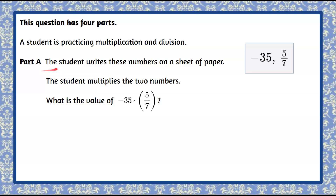Here's part A. The student writes these numbers on a sheet of paper. The student multiplies the two numbers, and you're asked: what is the value of negative 35 multiplied by five-sevenths? Please pause the video now, multiply, and then come back to check your work.